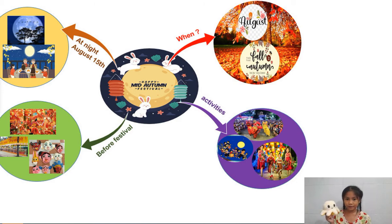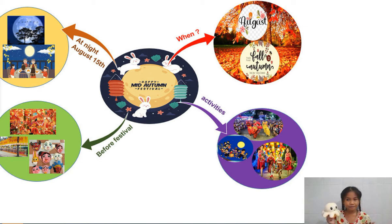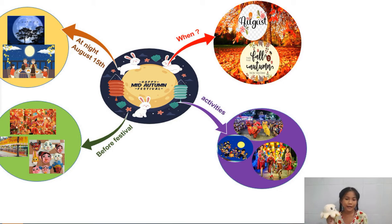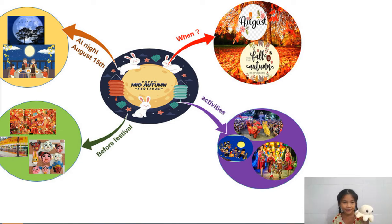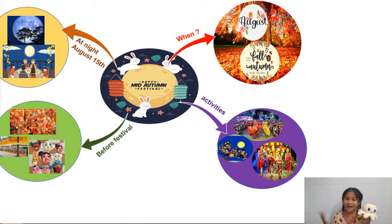Before this festival, you can prepare many things. You can watch the star-shaped lanterns — many kinds of lanterns. You can have masks, and masks can have many kinds of faces, like the characters in the folklore of Mid-Autumn Festival. Like the rabbit. There are many, many people — the boy in the moon, the girl in the moon, the monster, and the little rabbit. There are many kinds of masks in many colors and shapes.